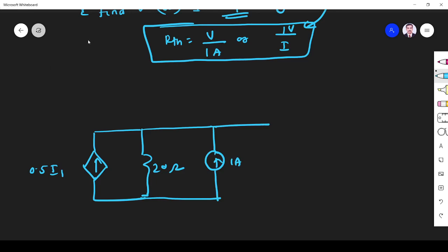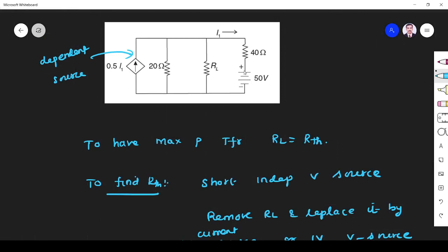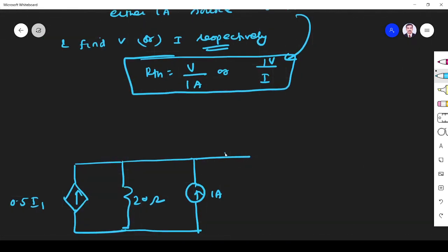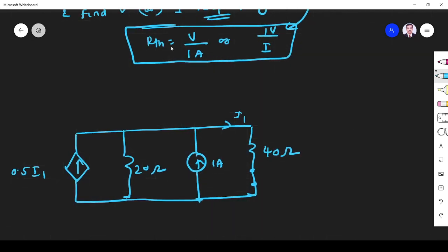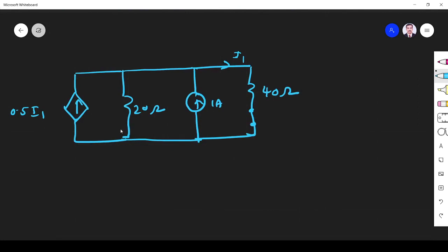Here I1, 40 ohm, this independent source should be shorted. So I1, 40 ohm, independent source is shorted. Typically we do for R-thevenin. Now what I have to find, I have to find V. So if I find V across this terminal, then R-thevenin is equal to V by 1 ampere.